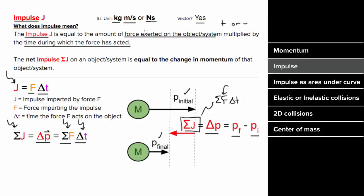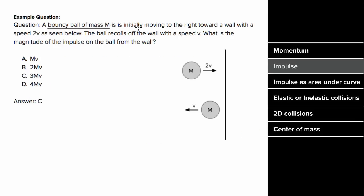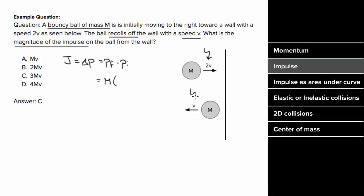Let's say a bouncy ball of mass m is initially moving to the right with a speed 2v, and it recoils off a wall with a speed v. We want to know the magnitude of the impulse on the ball from the wall. The impulse J equals the change in momentum, which is p final minus p initial. The final momentum is the mass times negative v (heading leftward), minus the initial momentum m times 2v, giving a net impulse of negative 3mv.